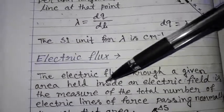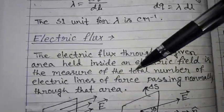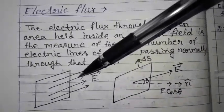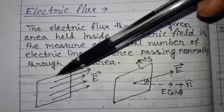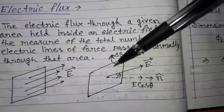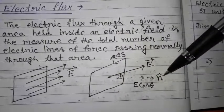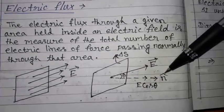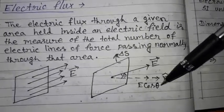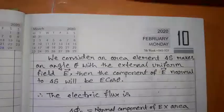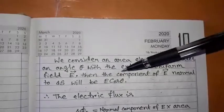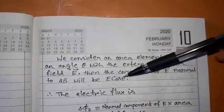Next is electric flux. The electric flux through a given area held inside an electric field is the measure of the total number of electric lines of force passing normally through that area. In the diagram, inside an electric field we consider a surface kept at an angle θ. The normal vector n indicates the surface normal, making an angle θ with the electric field E. The component of electric field along this direction is E cos θ.